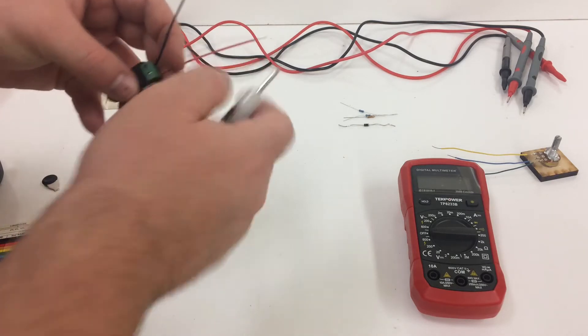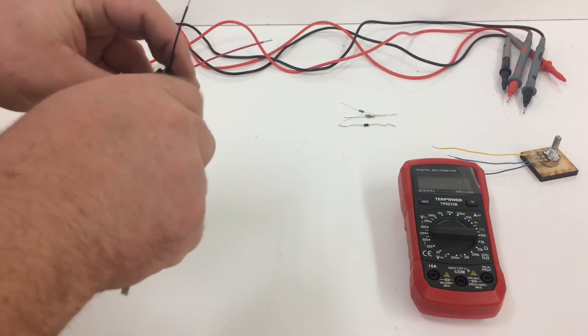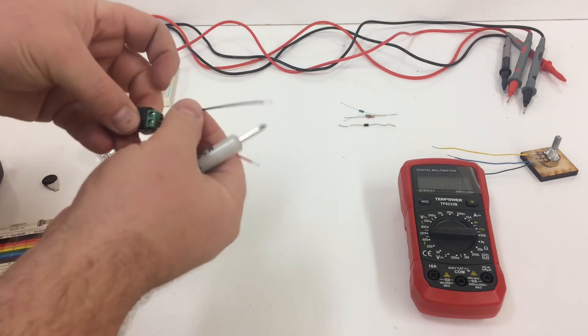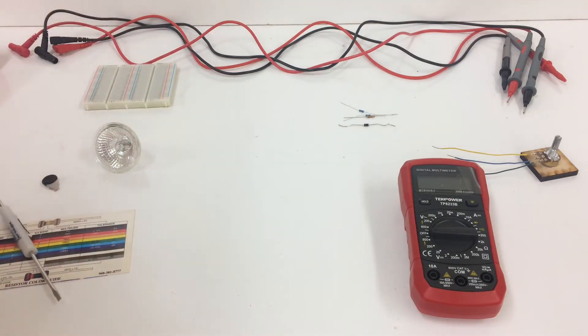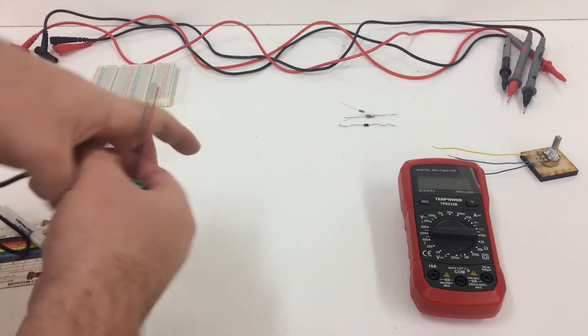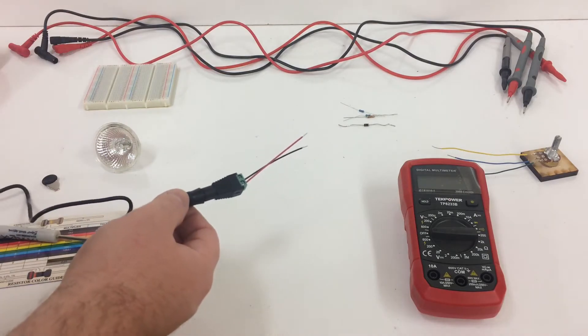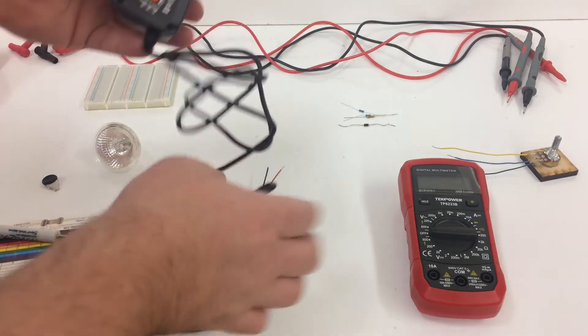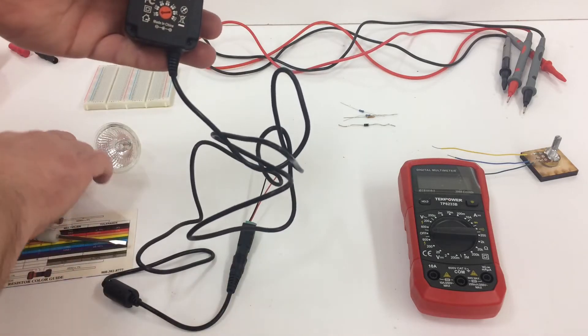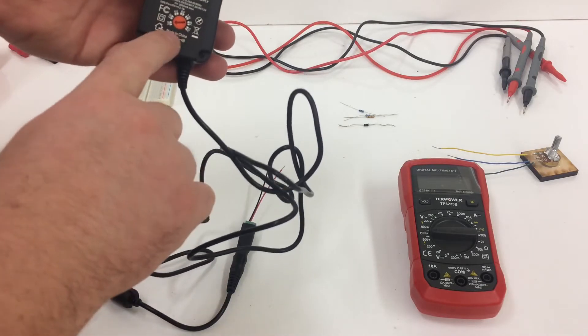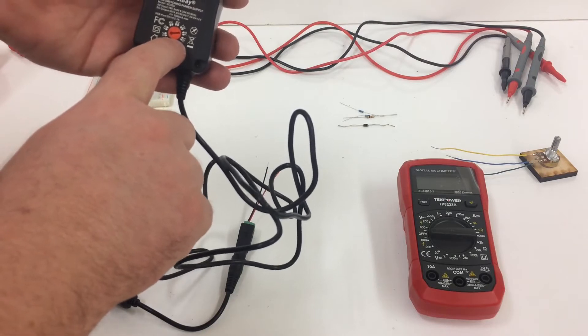We'll then take the red into the positive terminal and screw that down. And this gets plugged into the end of our power supply here. So our power supply, which is a Solbay supply, is a variable supply.